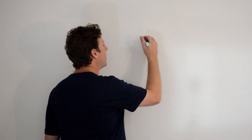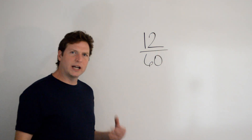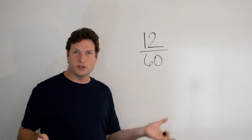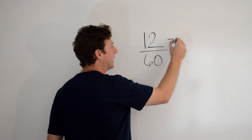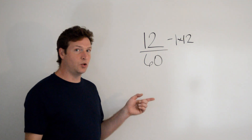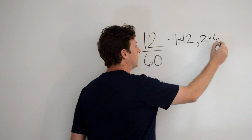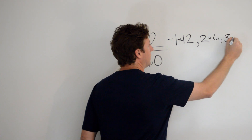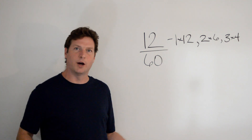Now that we have the easy ones down, let's look at some bigger numbers. What about 12 over 60? How can I reduce that? Let's follow our steps. Step 1 is finding all of the factors. For 12, I know 1 and 12, 2 and 6, and 3 and 4 — those are all factors of the number 12.